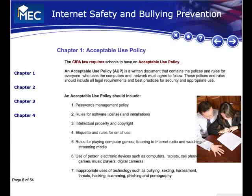An acceptable use policy should include password management policies: how long should the passwords be and how often should they be changed. Rules for software licenses and installations — what software is allowed to be downloaded and used. Intellectual property and copyright — what can be downloaded, what is copyrighted, and what is open or free. Etiquette and rules for email use and how we communicate with others. Rules for playing computer games, listening to Internet radio, and watching streaming media — what types of media and games are allowed, and who we are allowed to play with on the Internet.